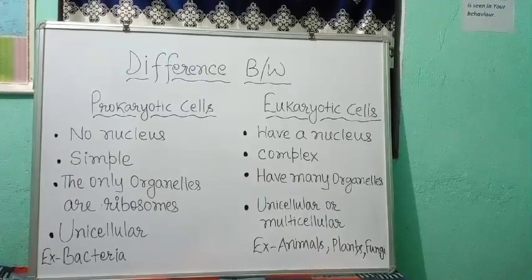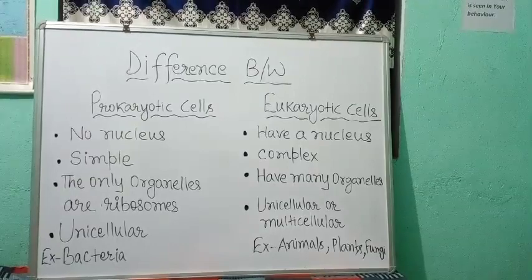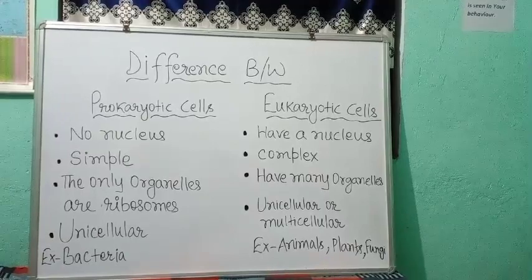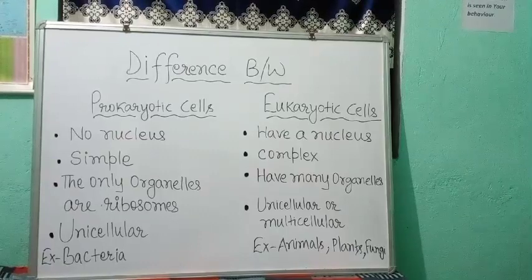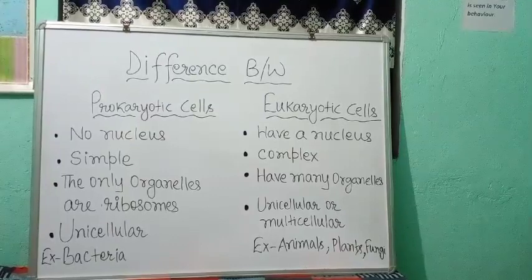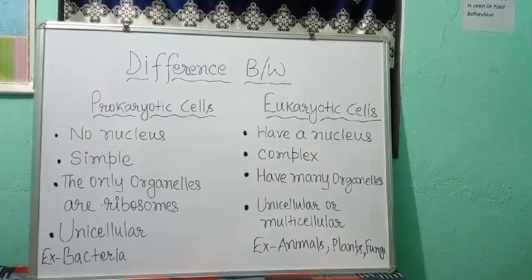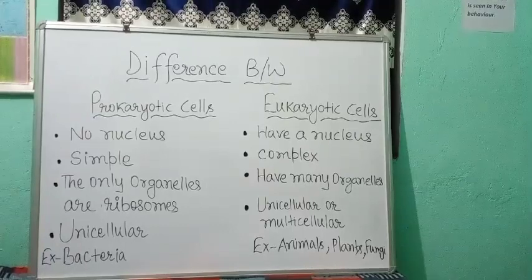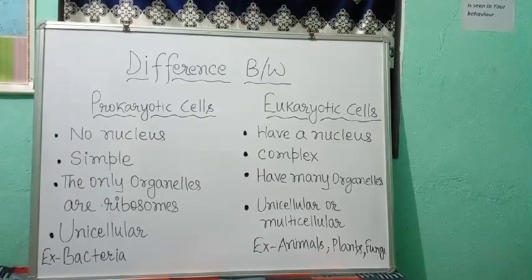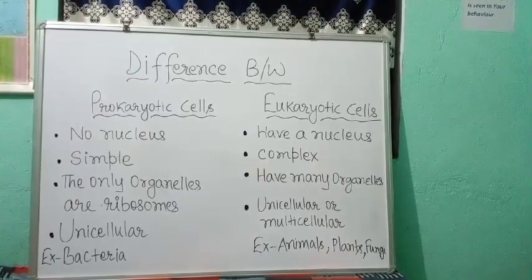Prokaryotic cells are simple while eukaryotic cells are complex. The only organelles in prokaryotic cells are ribosomes, while eukaryotic cells have many organelles. Prokaryotic cells are unicellular, while eukaryotic cells are unicellular or multicellular. Prokaryotic cells have a small size while eukaryotic cells have a large size. Bacteria are prokaryotic cells, while animals, plants, and fungi have eukaryotic cells.